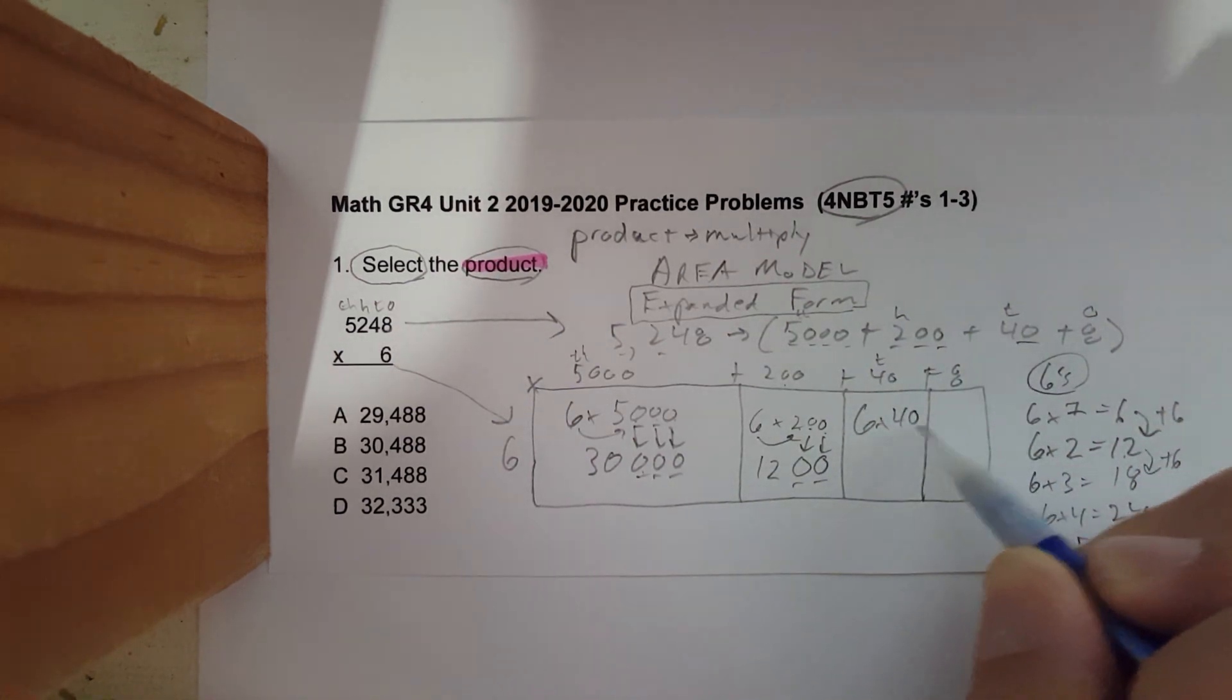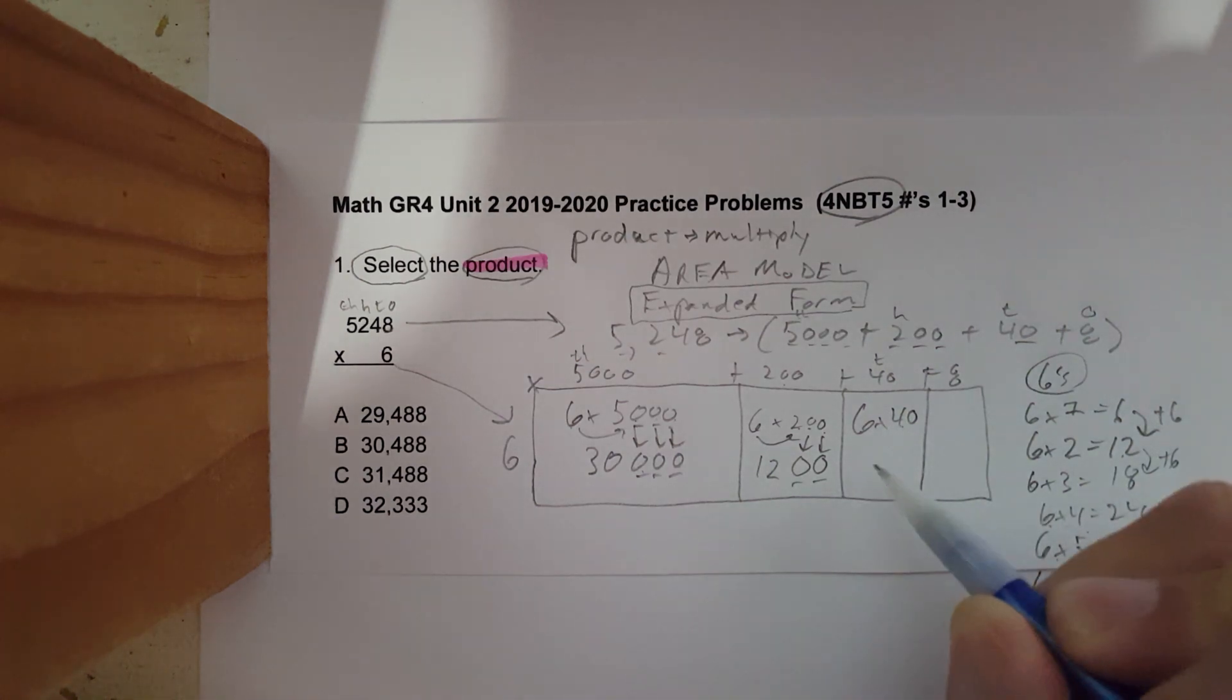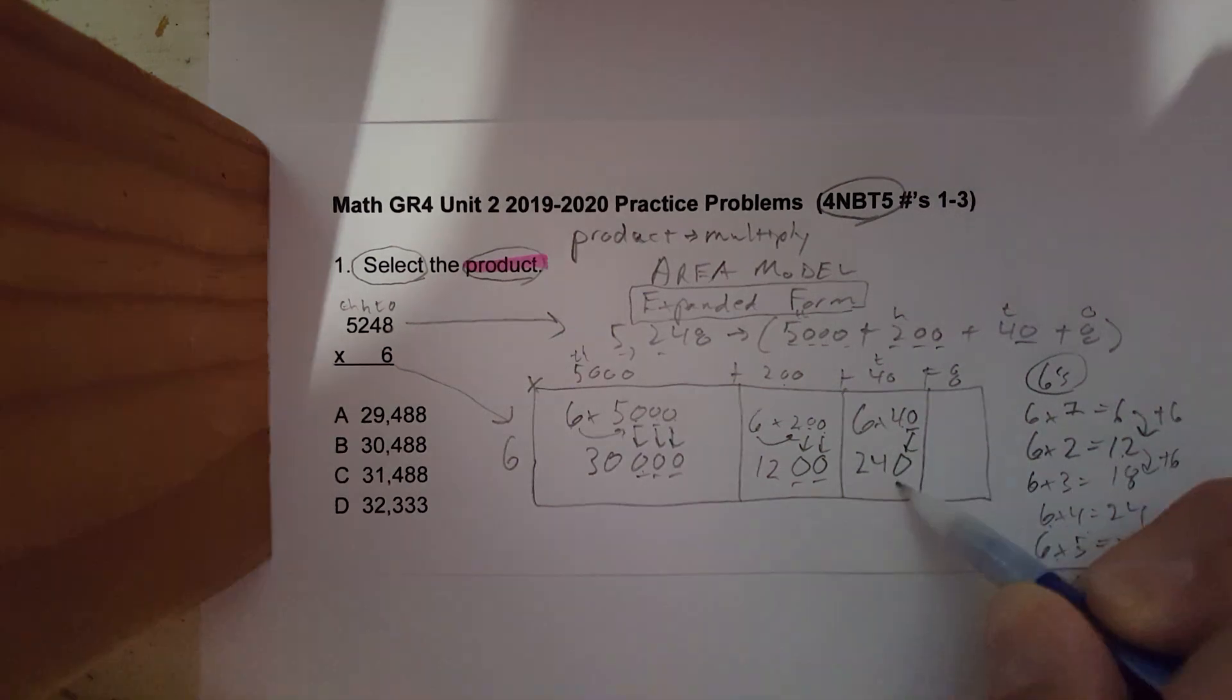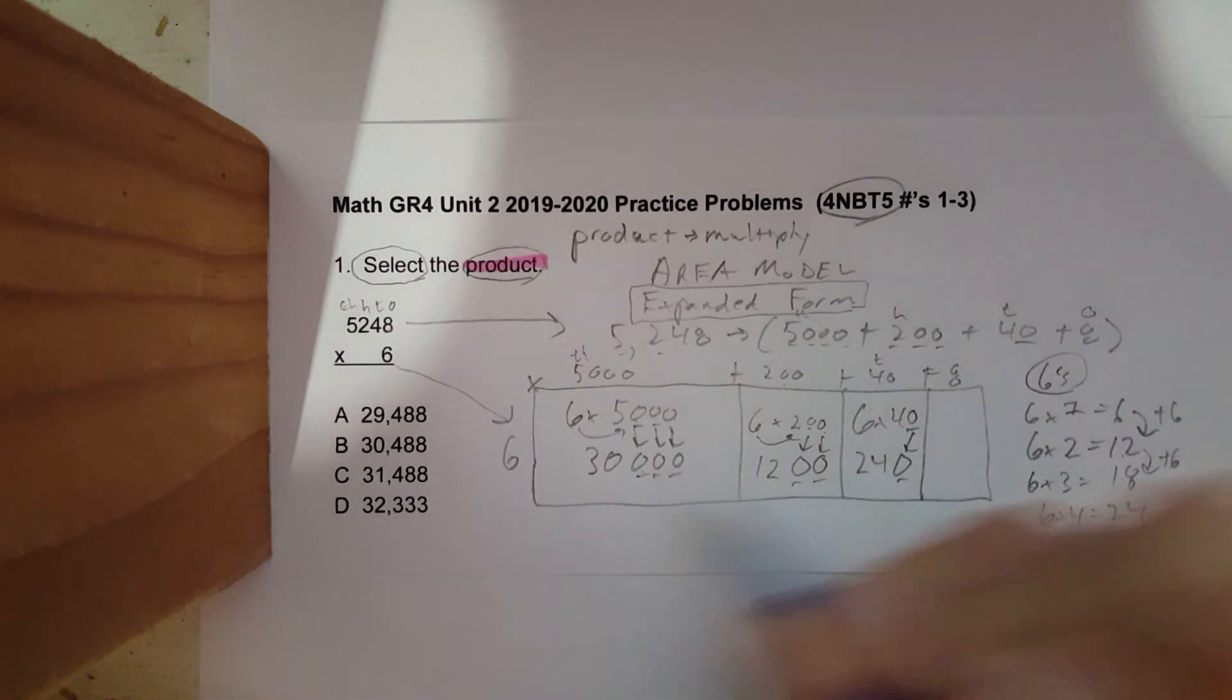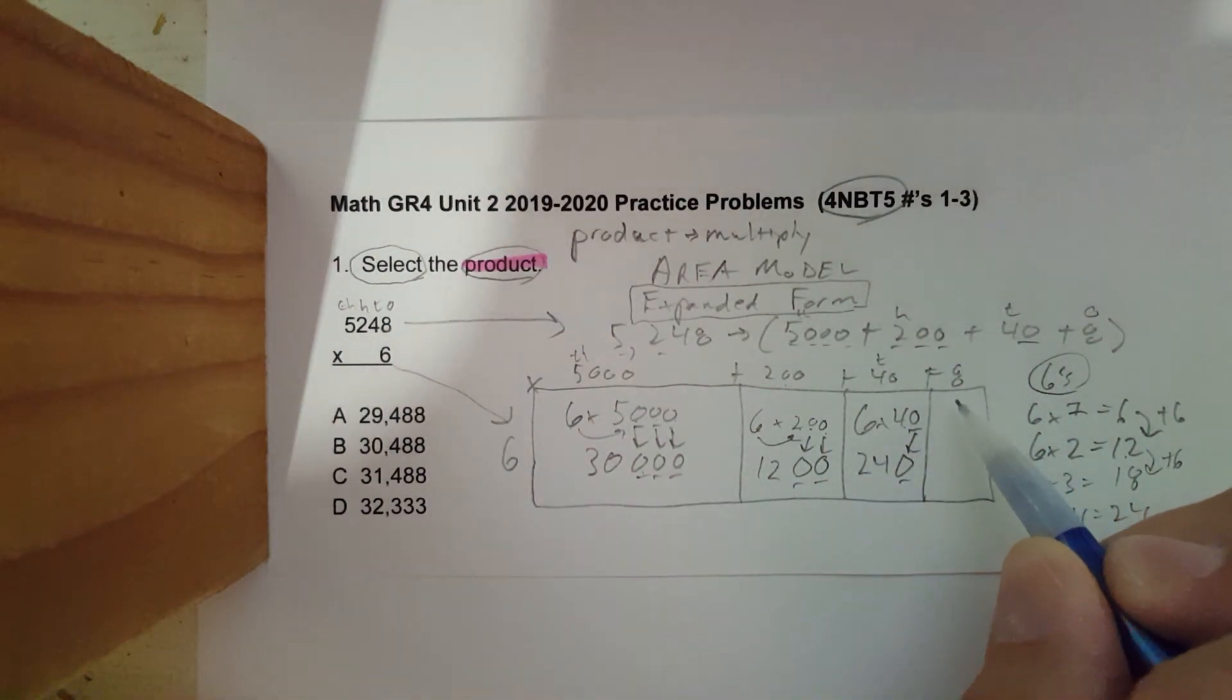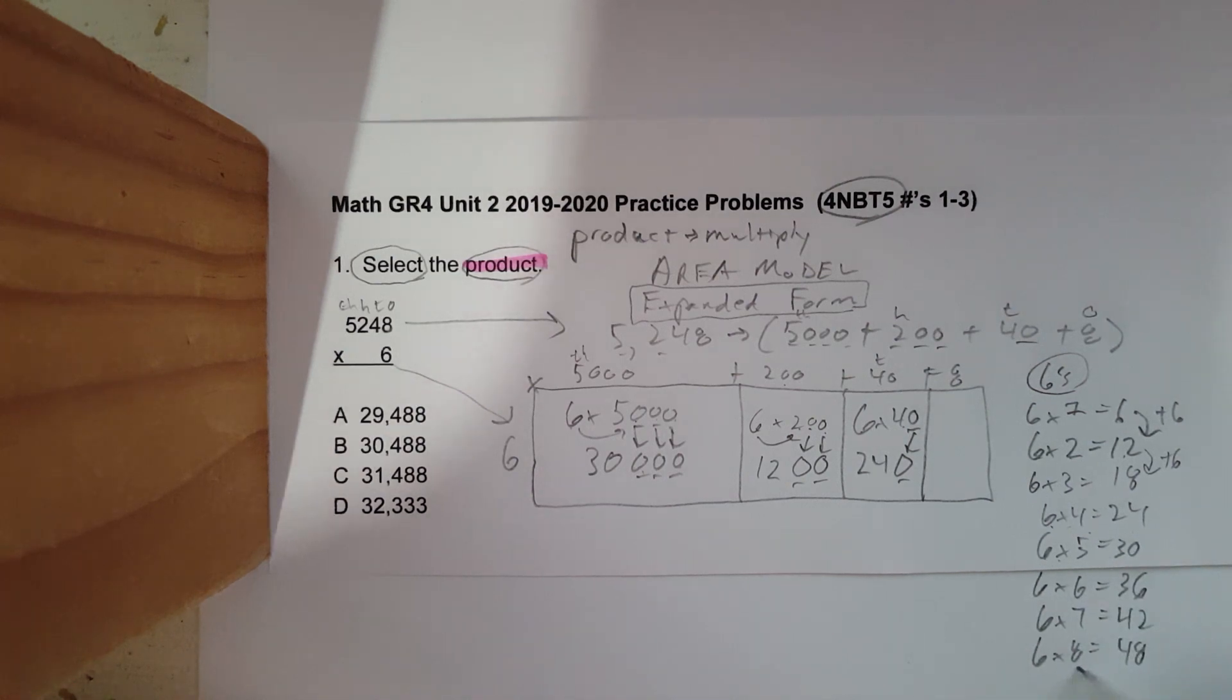Next up, we're doing the tens. There are four tens, also known as 40. Six times four - six times four is 24. How many zeros do I have? I have one zero.